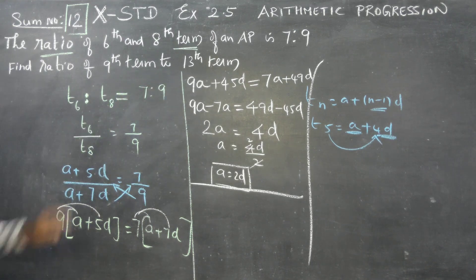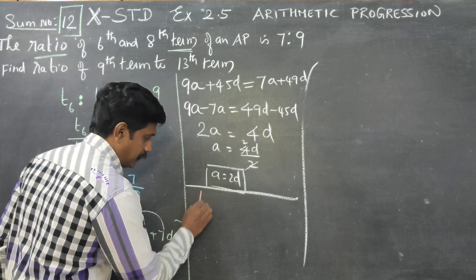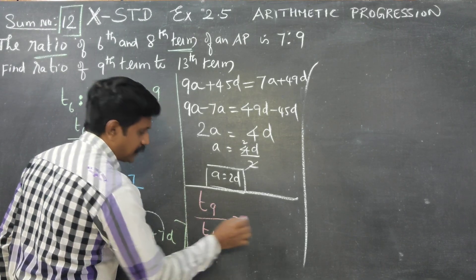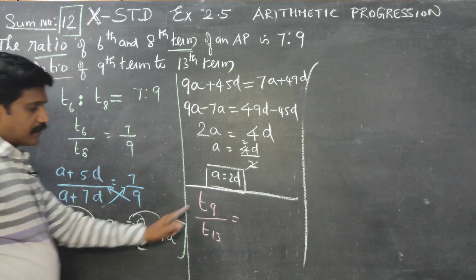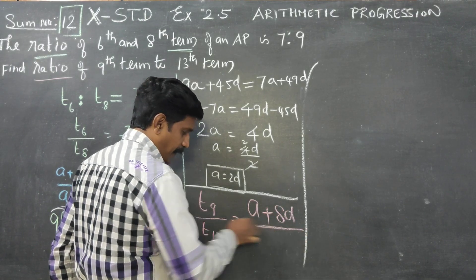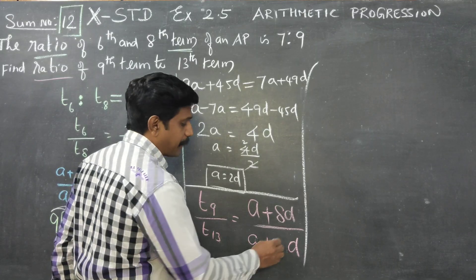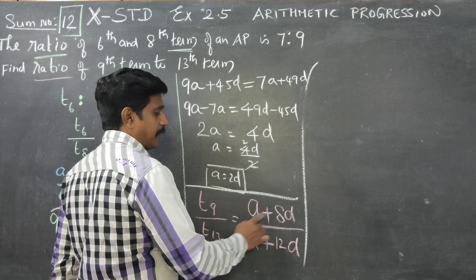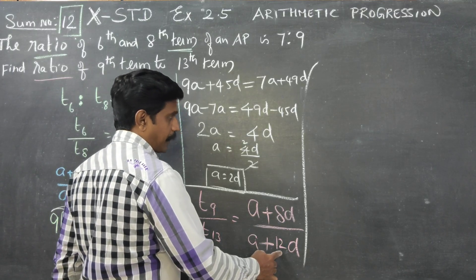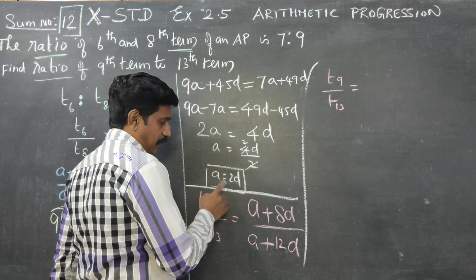Next, proceeding to find the ratio of the 9th term to the 13th term. T9 by T13. T9 equals A plus 8D, using the formula A plus N minus 1 into D.